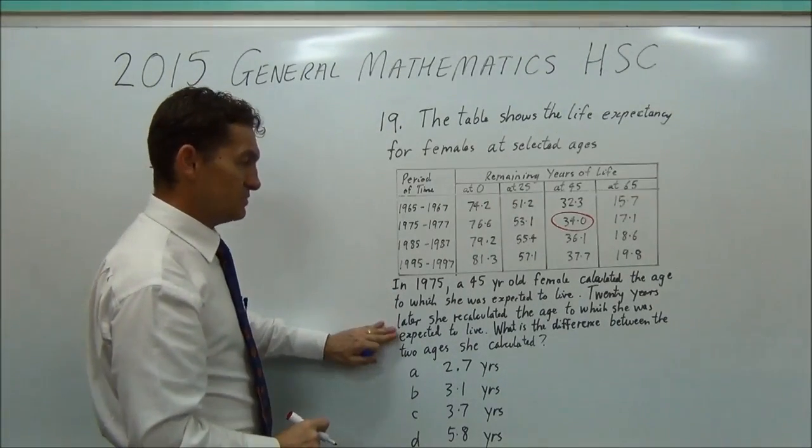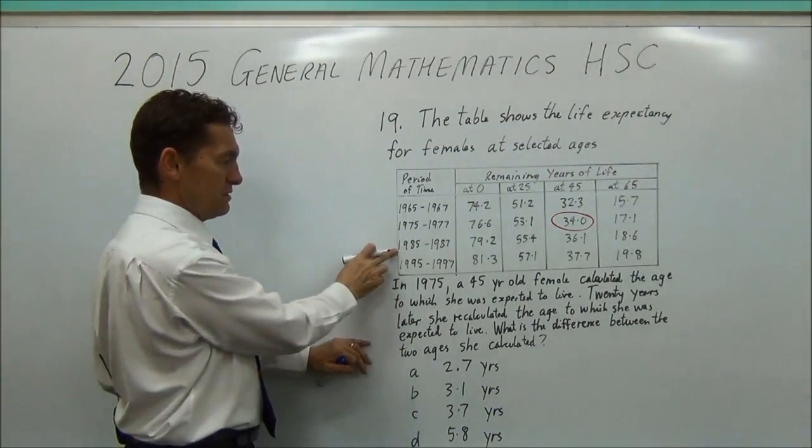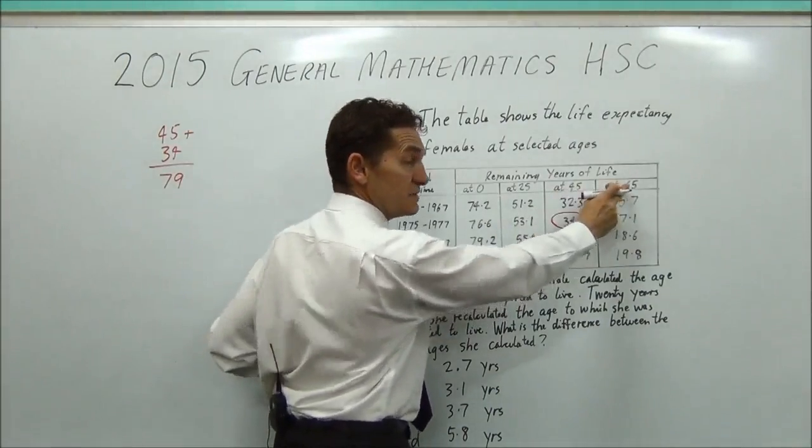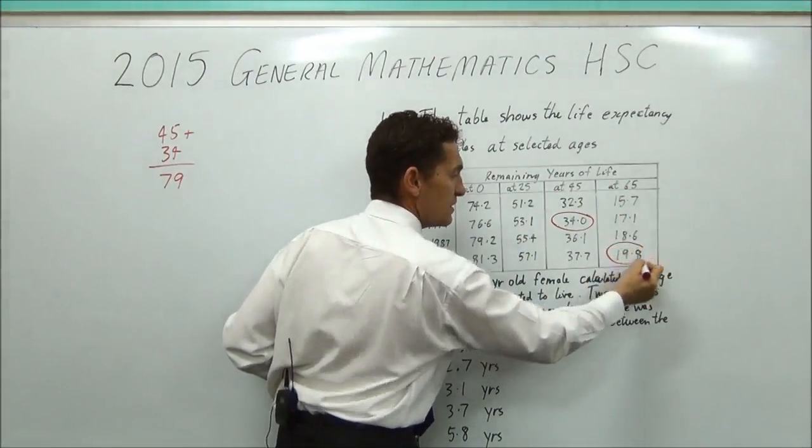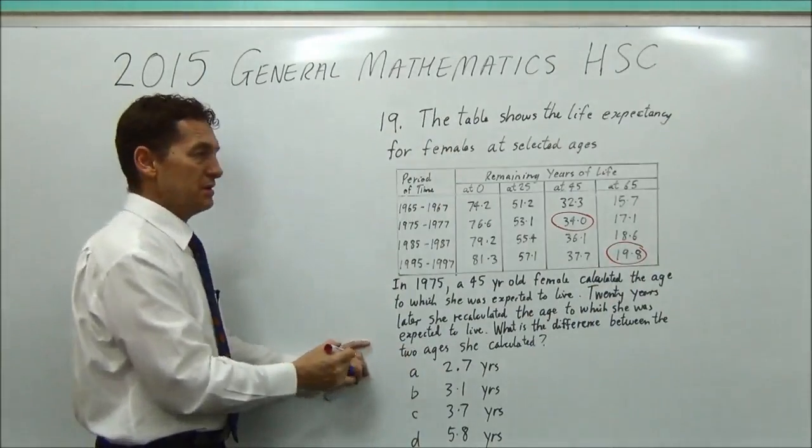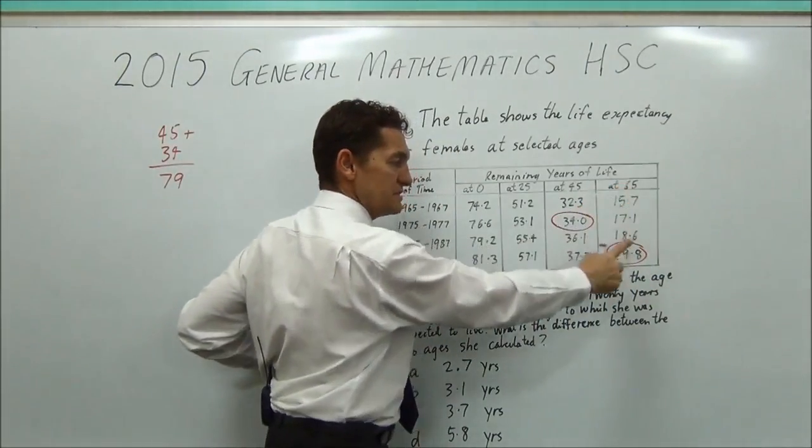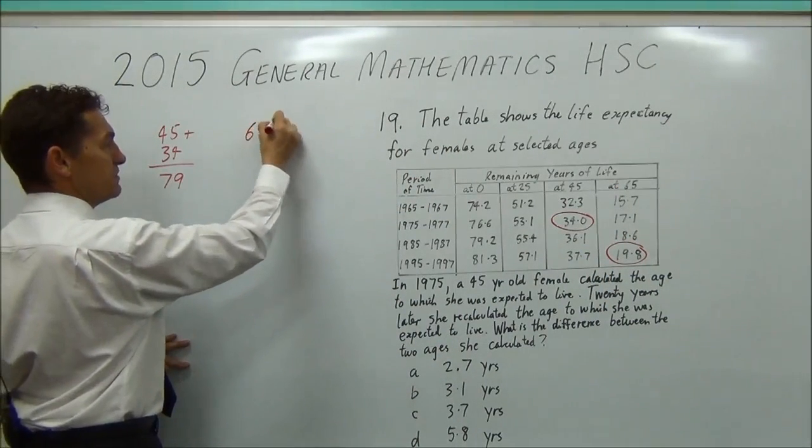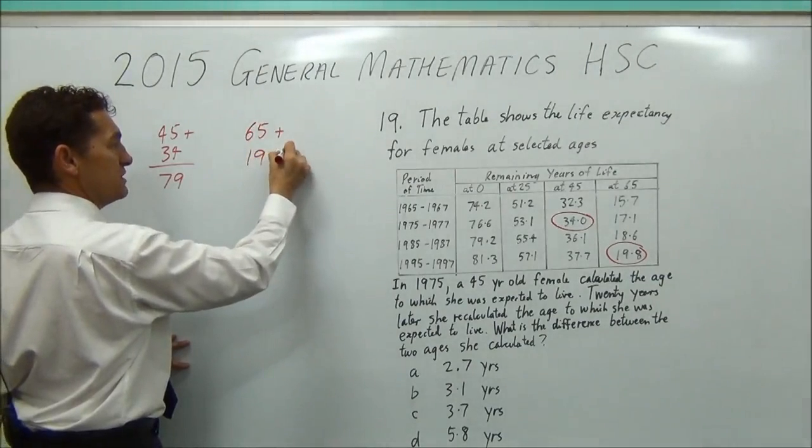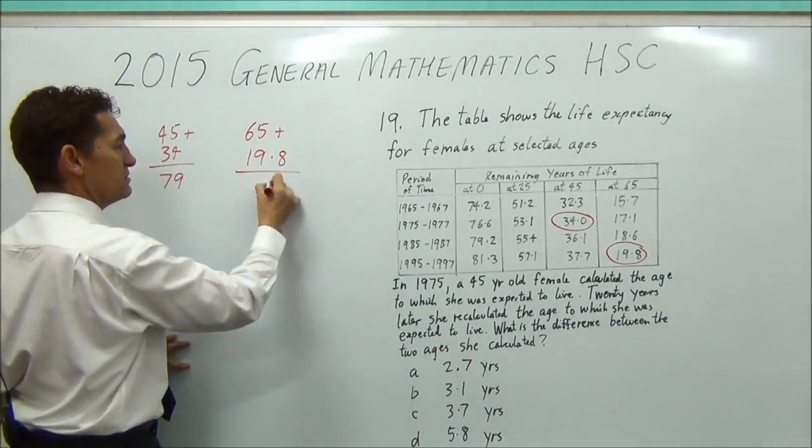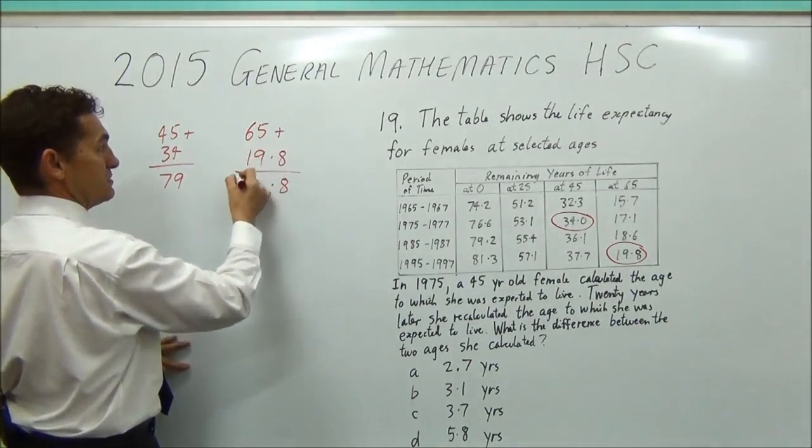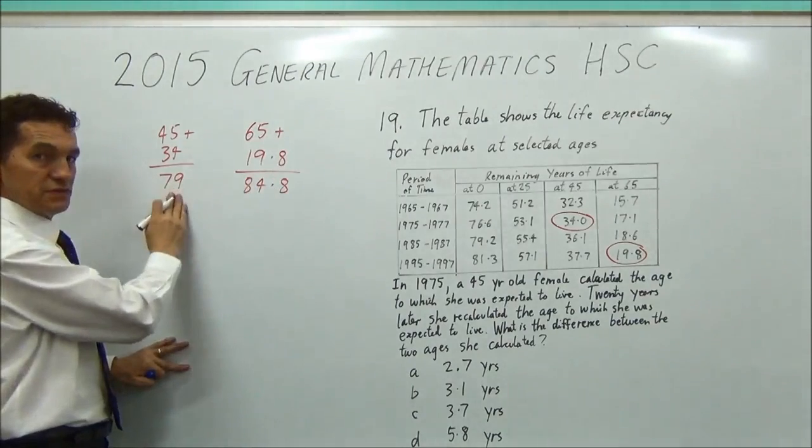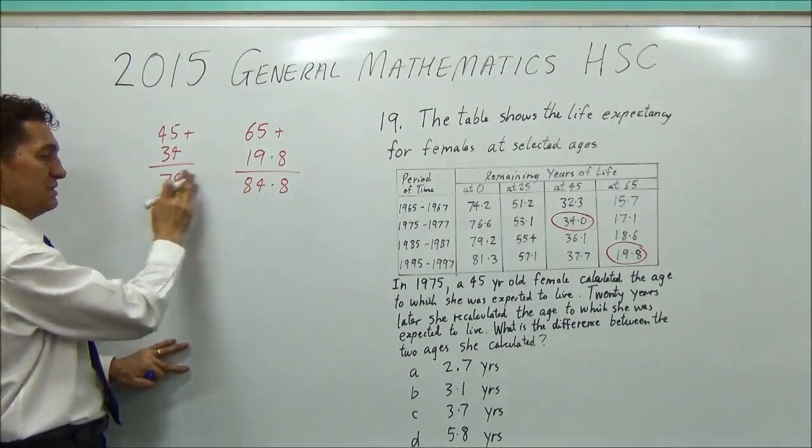Then she does it again 20 years later. So 20 years later, and now she's not 45, she's now 65. So you've got to look at that number. So now she's 65, she's expected to live this much longer. So again, you've got to do another addition. 65 plus 19.8 equals 84.8.